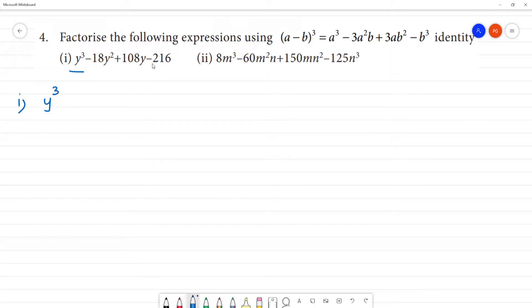Y cube is the first term. 216 - if we look at the cube, 6 cube is 216. That is, 6 multiplied by 6 multiplied by 6.